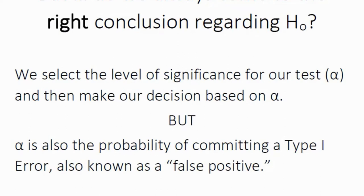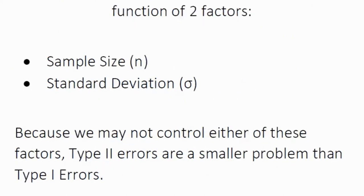When we conduct our test, we select the level of significance alpha and make our decision based on it. Alpha is also the probability of committing a type one error — also known as false positives. Like false positives, we have false negatives, which are type two errors, represented by the Greek letter beta. Type two errors are a function of two factors: sample size and standard deviation. Researchers often cannot control either, so type two errors are generally agreed to be a much smaller problem than type one errors.